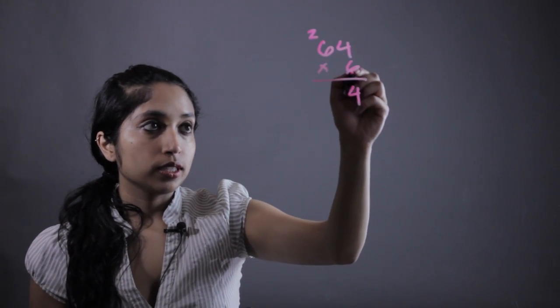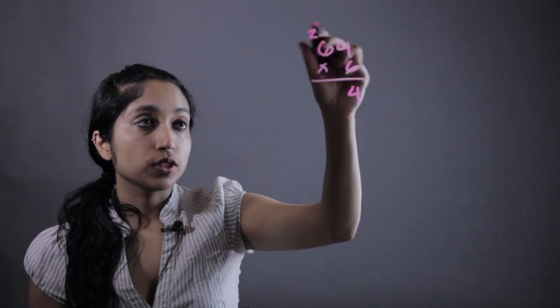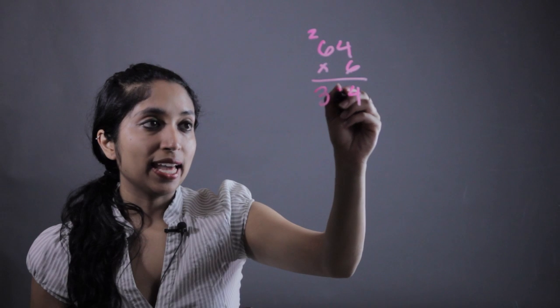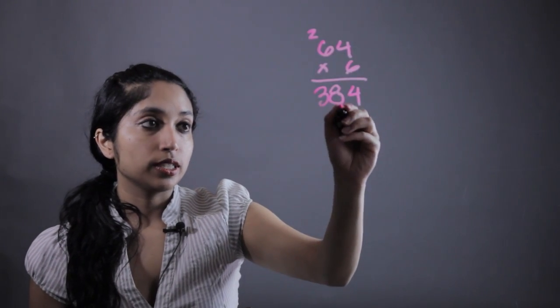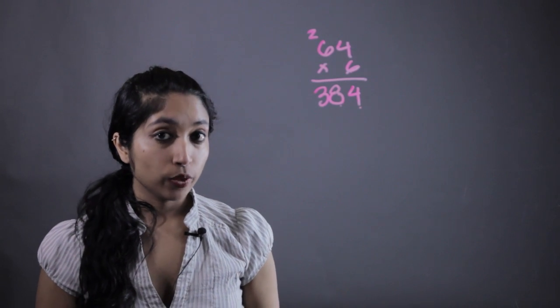And then we multiply these. 6 times 6 is 36. We just have this 2 hanging out, so we add that in. 36 plus 2 is 38. Write that down here. 384. So that's pretty simple.